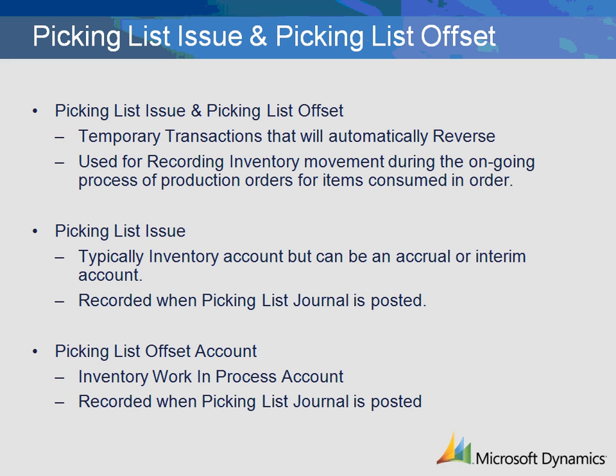The Picking List Offset Account Transaction is the setup related to the offset of the Picking List Issue Transaction. The transaction is created when the Picking List Journal is posted. The ledger account for this transaction is the inventory work in process account and is debited at the time of Picking List posting.